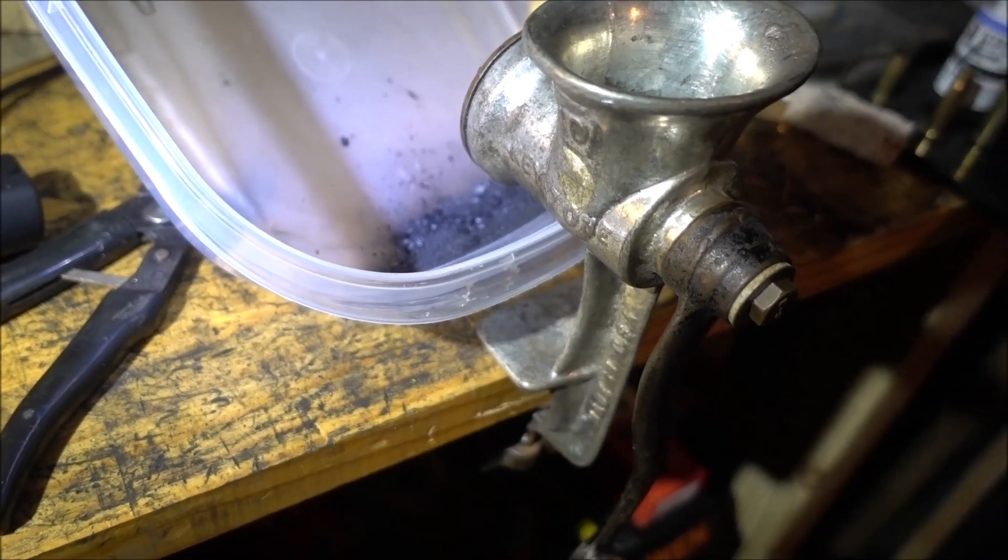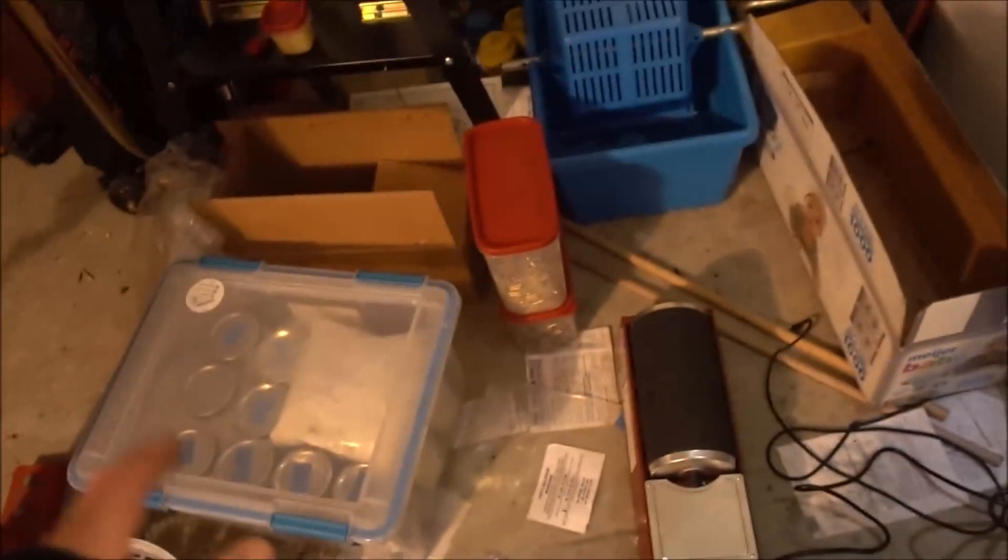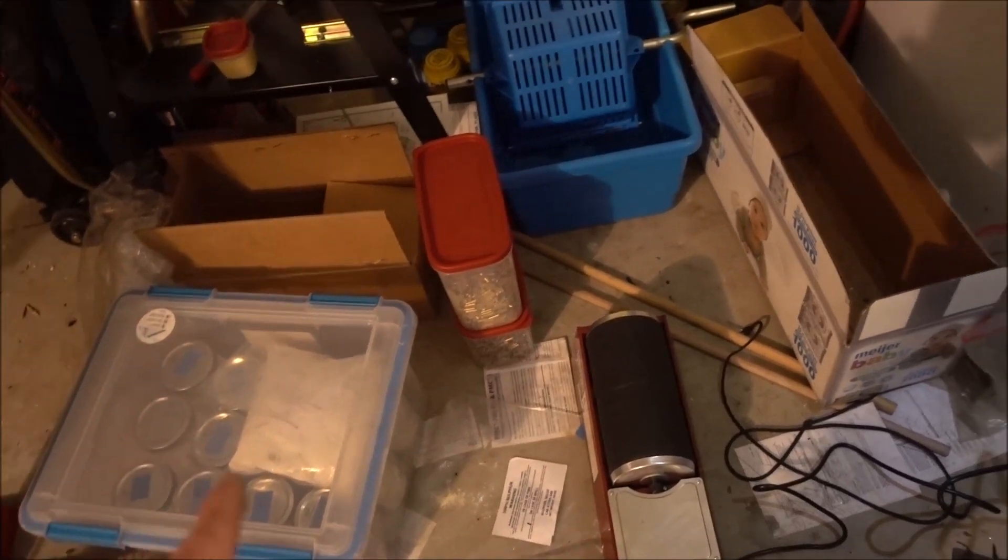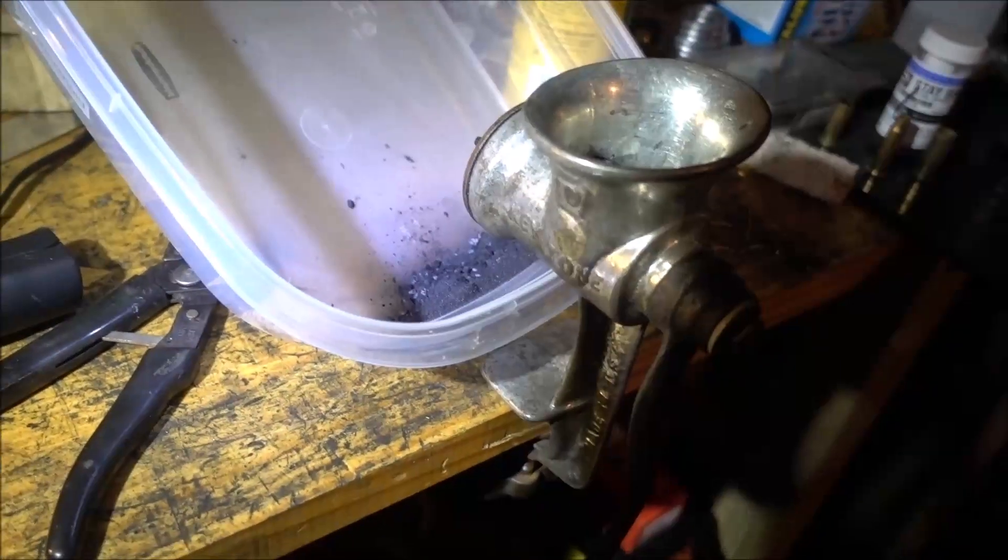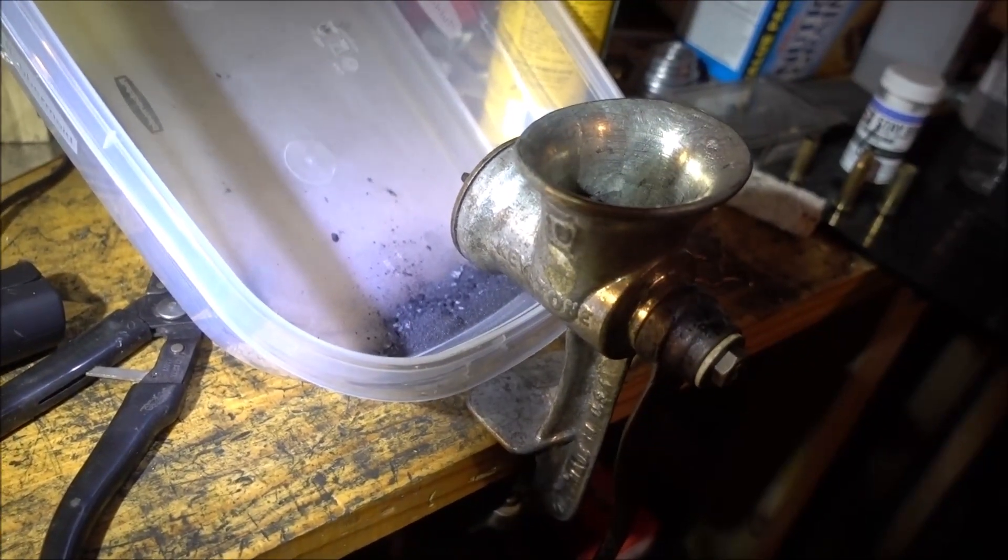So once I get it fine enough, they're going to go in those jars along with the other ingredients. I'll only mix a pound at a time, and we'll get to that later. So right now I'm going to do some grinding, and then I'll show you how I do my sifting and I'll show you the other grinder, how that works.